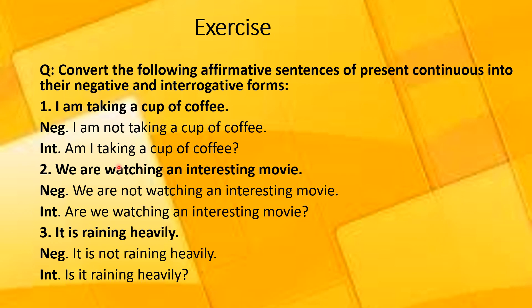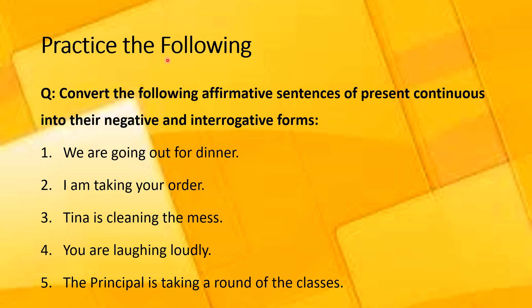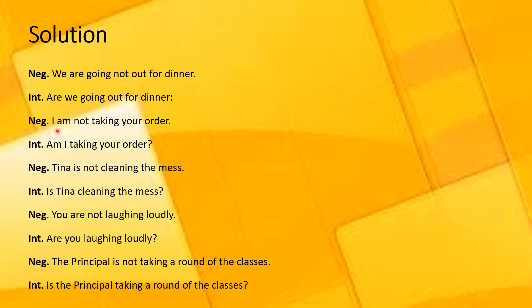I hope that this exercise would help you more in understanding the concept of how a given affirmative sentence of present continuous tense should be converted into its negative and interrogative forms. I want you to practice the following. Statements from 1 to 5 are given to you — these are affirmative sentences of present continuous tense. Convert them into the negative and interrogative forms, and then match your answers with the solution provided.